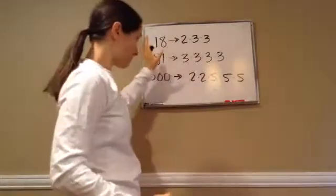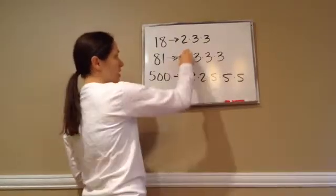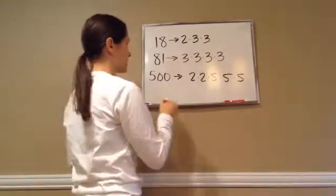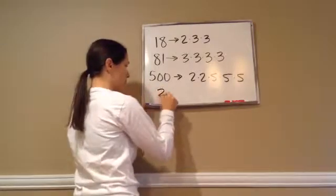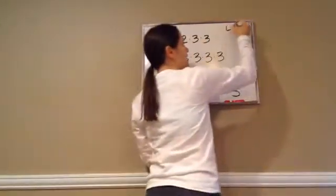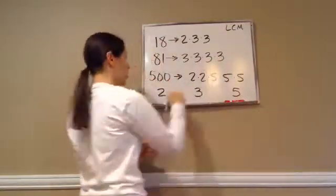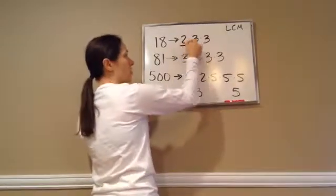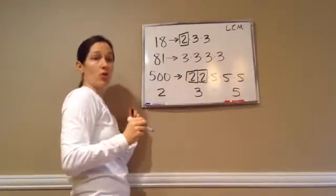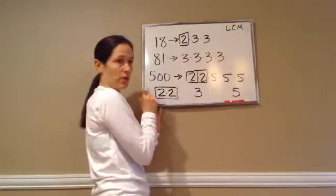To find the Least Common Multiple, look at all three of these and tell me what numbers you see. We see 2s, we see 3s, and we see 5s. What you do with the Least Common Multiple — it's kind of interesting — is you're finding the most of something. For 2s: 18 has one 2, 81 has zero 2s, and 500 has two 2s. So you take the most, which is 2 times 2.